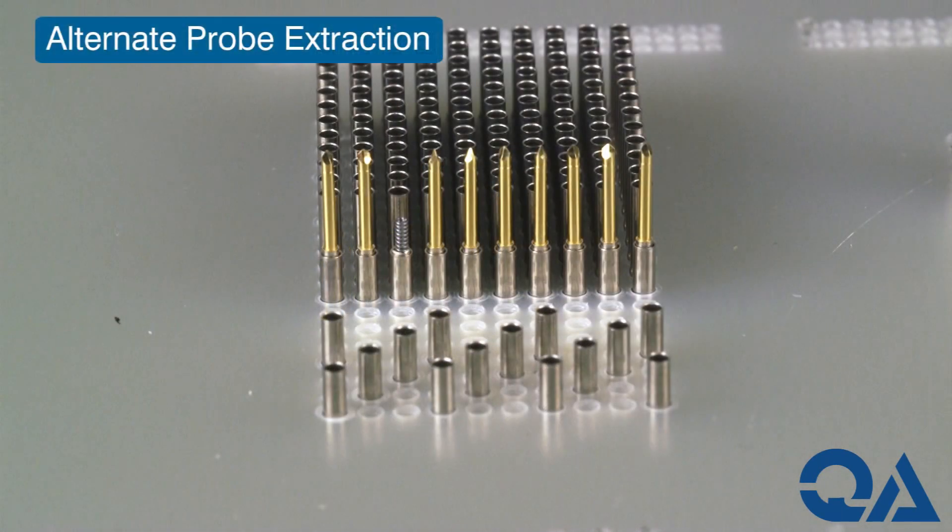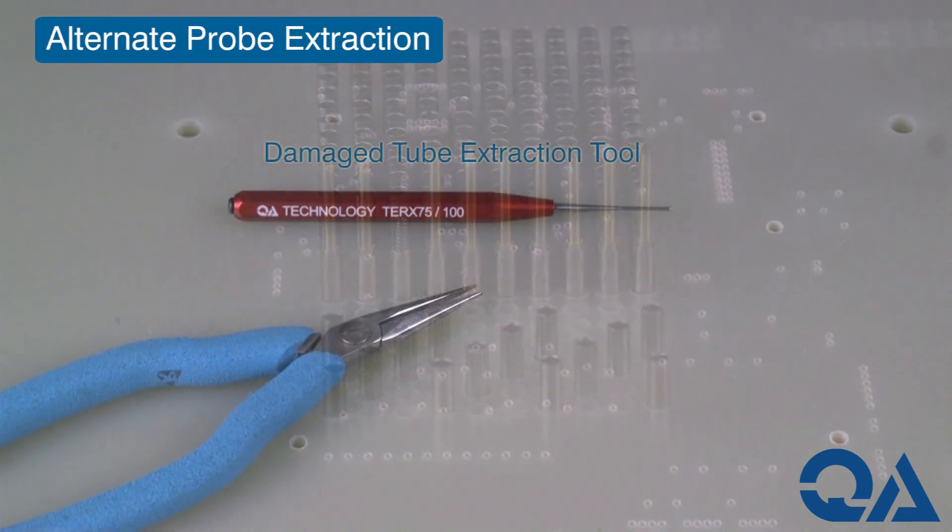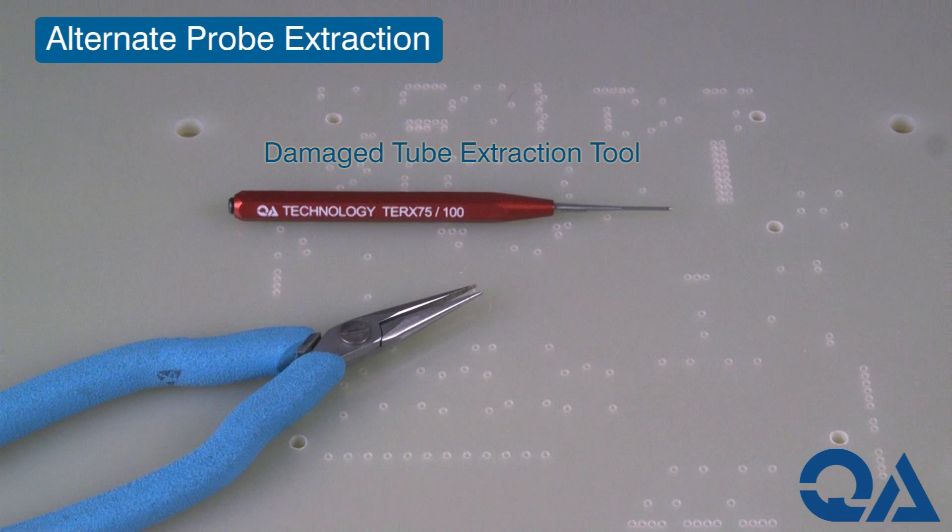This segment instructs alternate ways to extract a damaged probe. To complete this, you'll need a damaged tube extraction tool and needle-nose pliers.